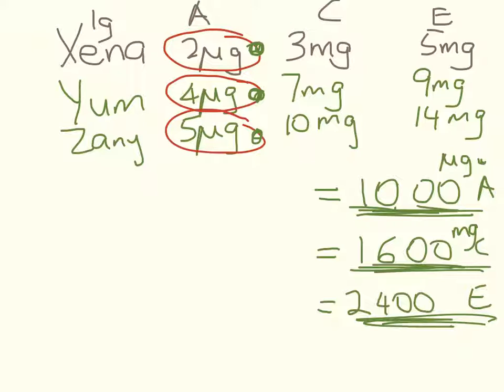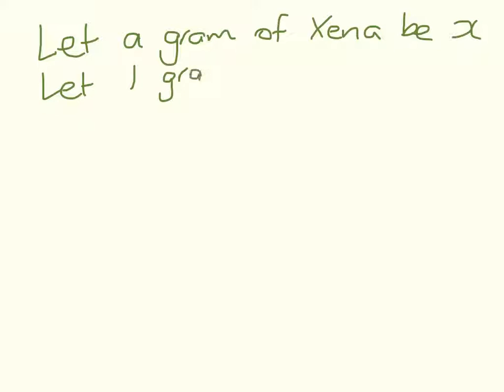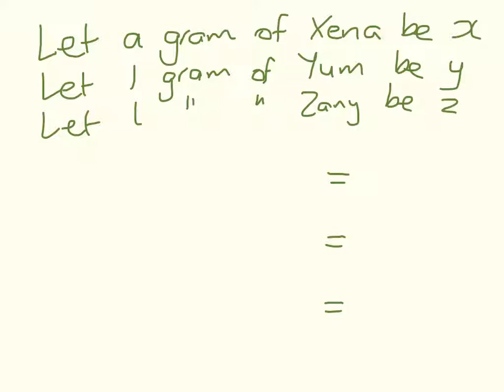But before we go any further, we need to define our variables. So very conveniently, they start with X, Y, and Z. Right, so we'll start with some let statements like you did in year 9 and 10. Let a gram of Xena be X. Let one gram, or a gram, of Yum be Y. And let one gram of Zany be Z. Okay, so now we're ready to go. So hopefully you copied down that table from a slide back. If you didn't, you can pop back the beauty of Rewind and get that down into your notes. So here come our three equations.